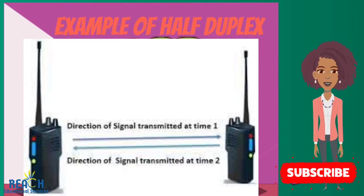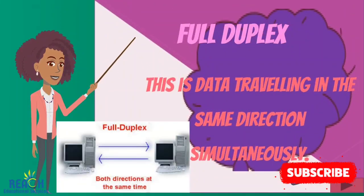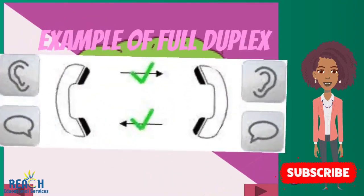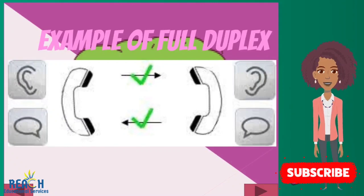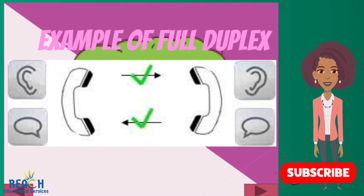Let's move right along to the final data direction, which is full duplex. This is where data is transmitted simultaneously. Full duplex is similar to a highway where you have vehicles traveling back and forth at the same time. The most popular example of full duplex is the cell phone, where one does not have to wait until the other person is finished speaking to respond.